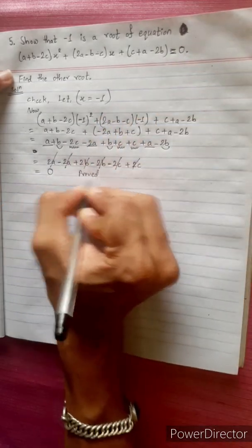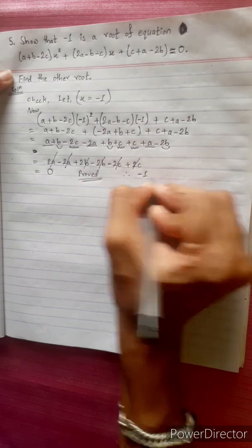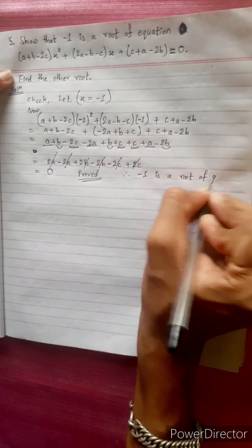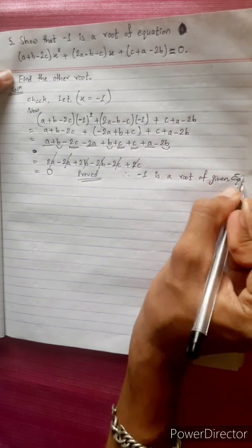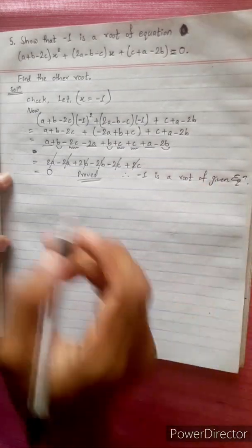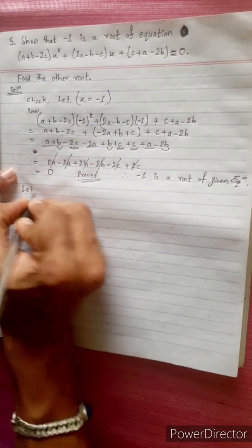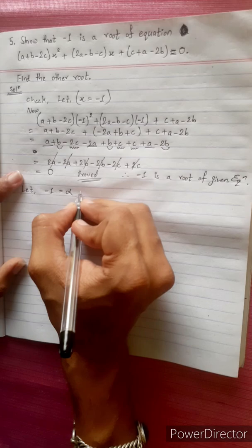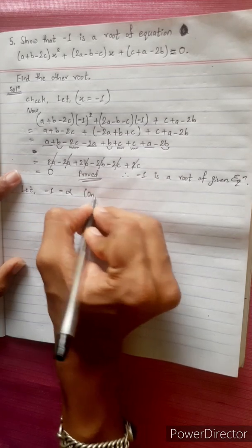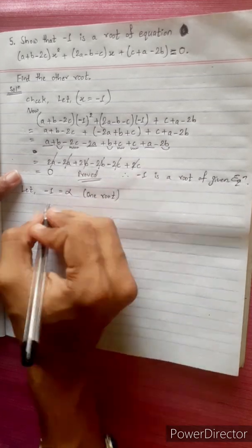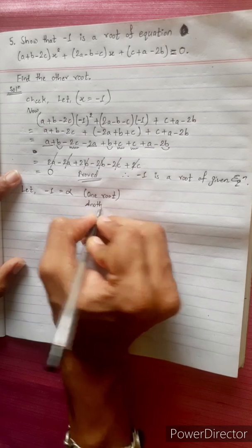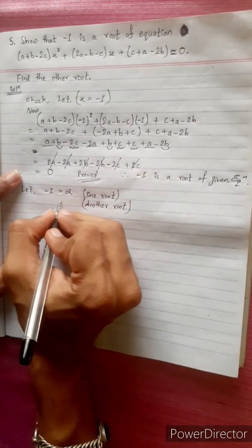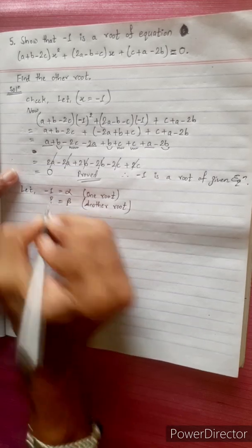Prove bha yo. Therefore minus 1 is a root of given equation. Given equation ko root ra cha. Vani bashi abo let. Minus 1 equals to alpha. Vida root yobo. Abo another root. Yobaniko 1 root. This bi shadi another root pa cha cha cha amla hai. Another root. Suppose beta. Tha cha hai na na.